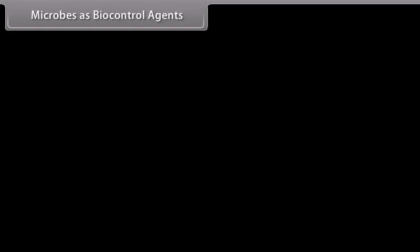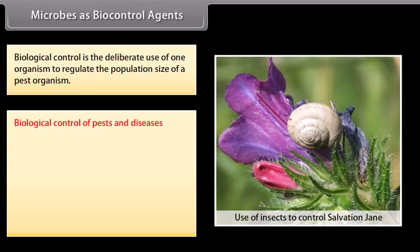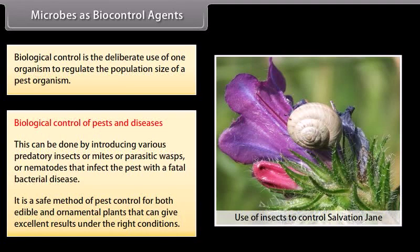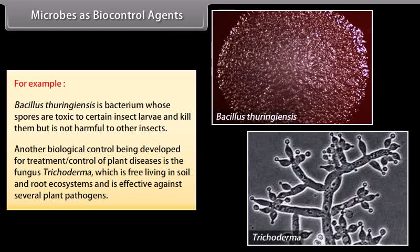Microbes as biocontrol agents. Biological control is the deliberate use of one organism to regulate the population size of a pest organism. This can be done by introducing various predatory insects, mites, parasitic wasps, or nematodes that infect the pest with a fatal bacterial disease. It is a safe method of pest control for both edible and ornamental plants. For example, Bacillus thuringiensis is a bacterium whose spores are toxic to certain insect larvae and kill them, but is not harmful to other insects. Another biological control being developed is the fungus Trichoderma, which is free-living in soil and root ecosystems and is effective against several plant pathogens.